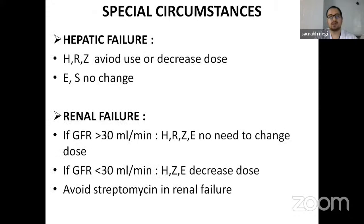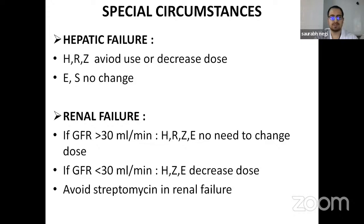Special circumstances: In hepatic failure, isoniazid, rifampicin, and pyrazinamide should be avoided or the dose decreased; there is no change for ethambutol and streptomycin. In renal failure, if GFR is more than 30 ml per minute, no dose adjustment is needed. If GFR is less than 30, isoniazid, ethambutol, and pyrazinamide doses should be decreased, and streptomycin should be avoided.